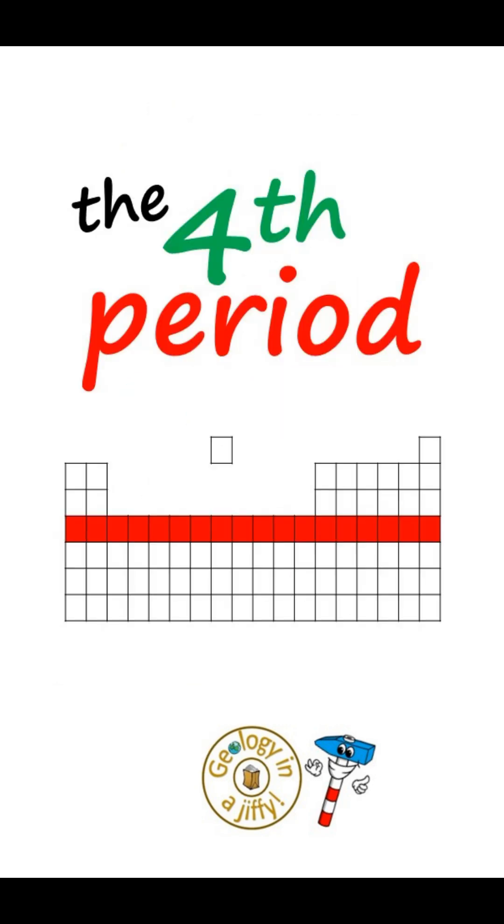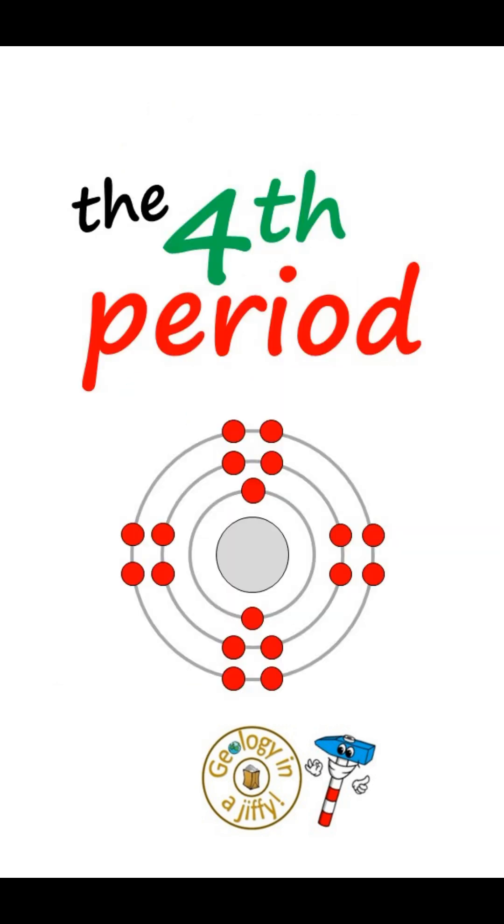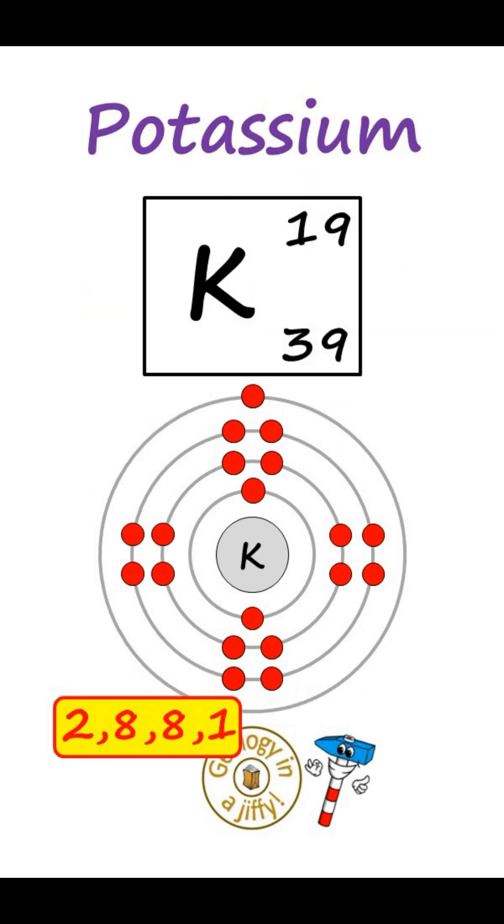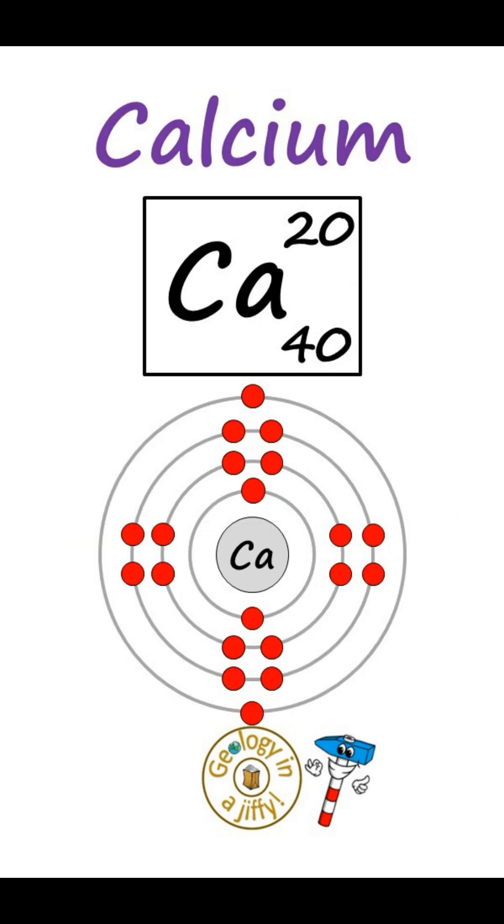The fourth period has the previous structure with an extra shell with potassium 2-8-8-1, and the 20th element, calcium, 2-8-8-2.